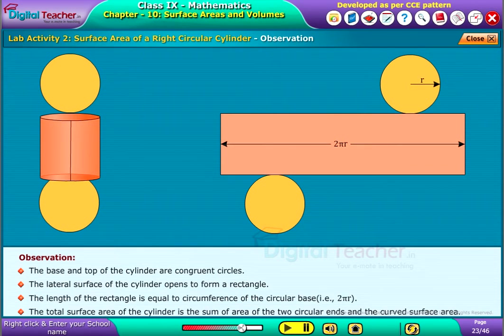The total surface area of the cylinder is the sum of area of the two circular ends and the curved surface area.